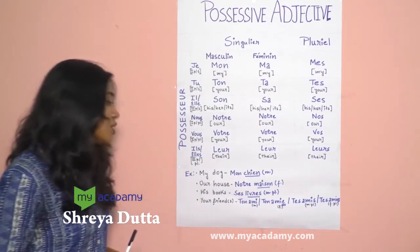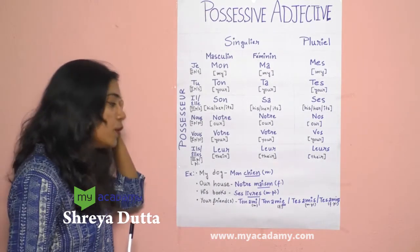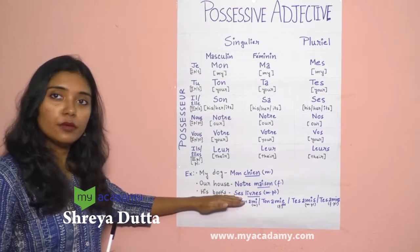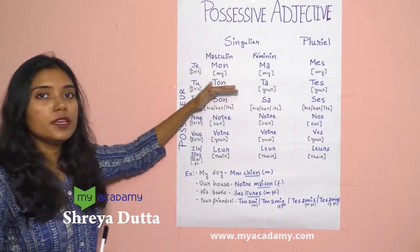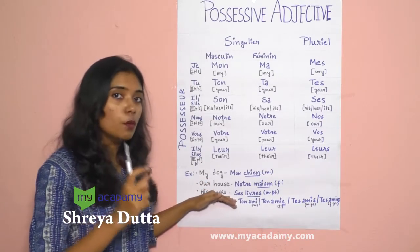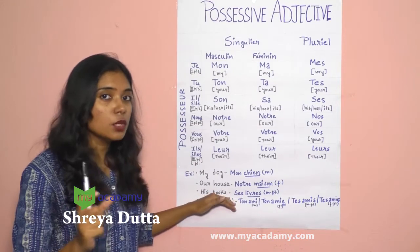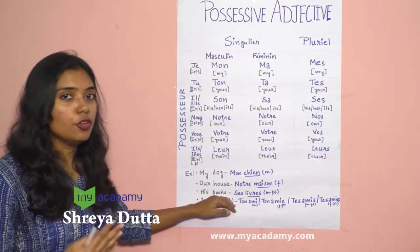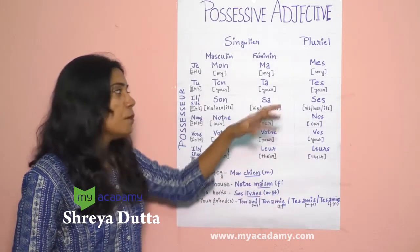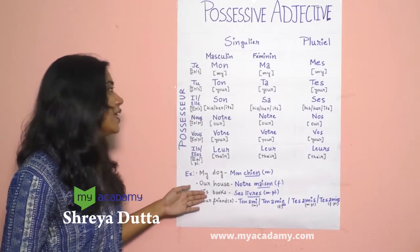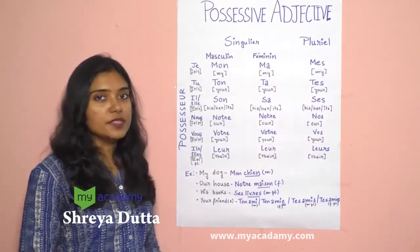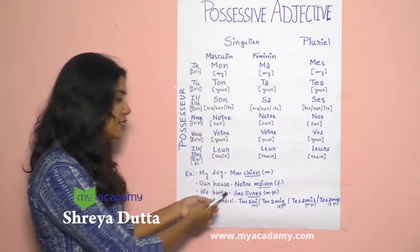The next example is his books. Books has an S, meaning it is plural. When the noun is plural, your adjective possessif must also be plural — that is very important. For book we use the word livre, which is masculine singular. When made plural, it becomes livres with an S — masculine plural. Be it masculine or feminine, for his/her in plural form, we use ses. So 'his books' becomes ses livres.